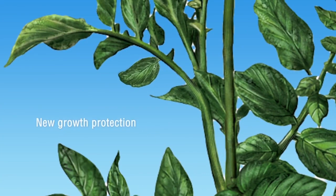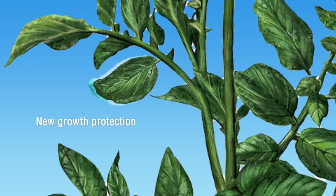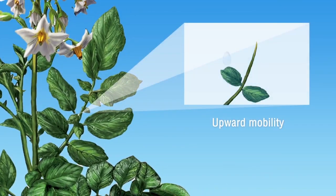Fluopicolide's mobility also means that Infinito provides grown leaves with complete protection as well. When Fluopicolide is applied to the stem, it moves up into the plant to protect new growing points.